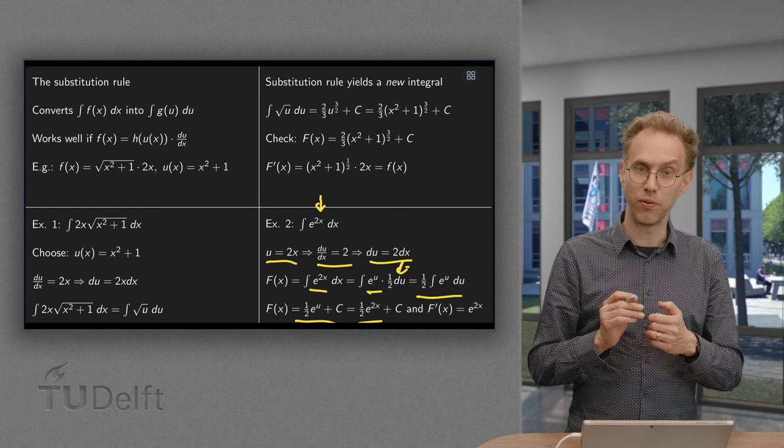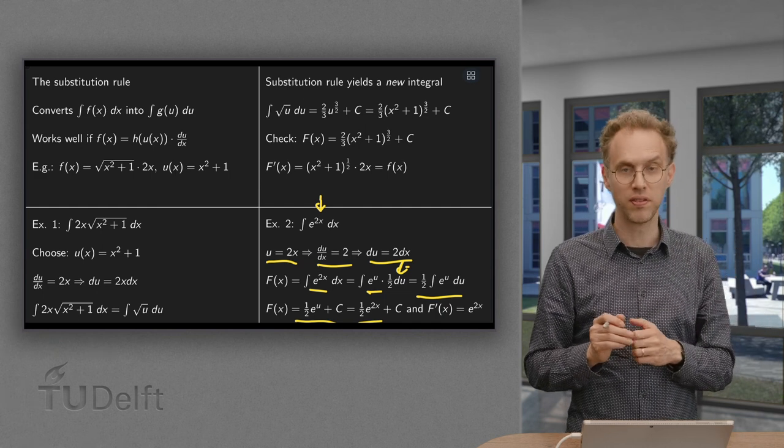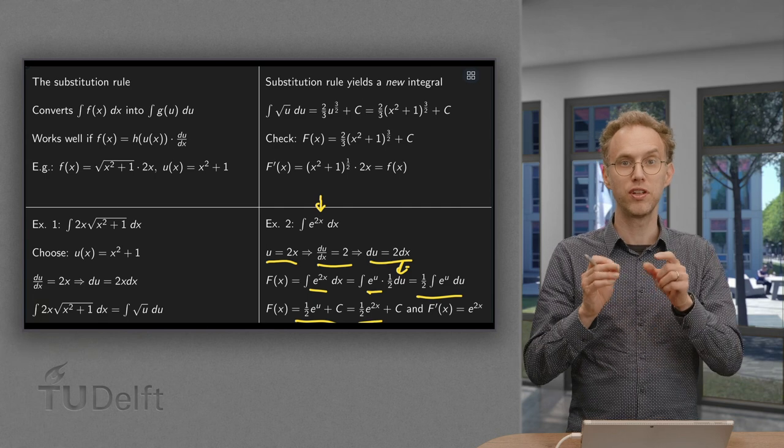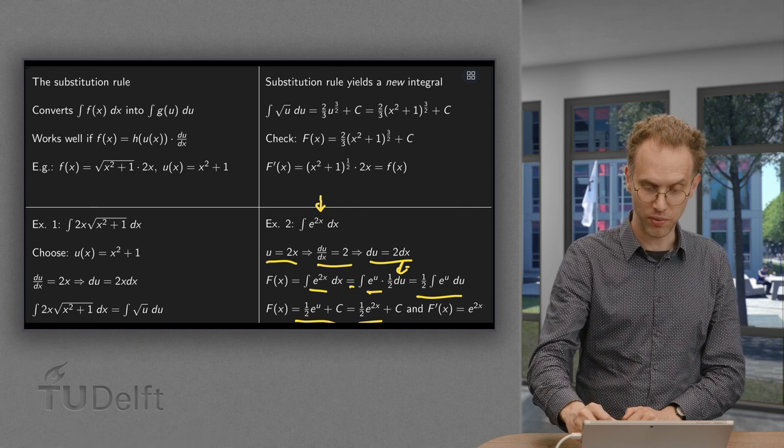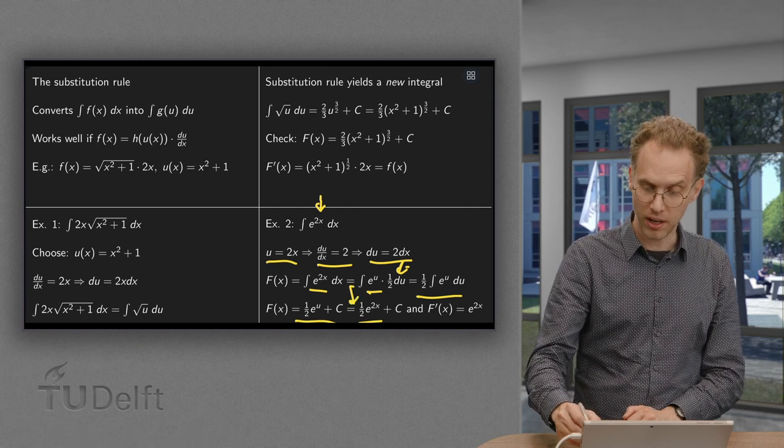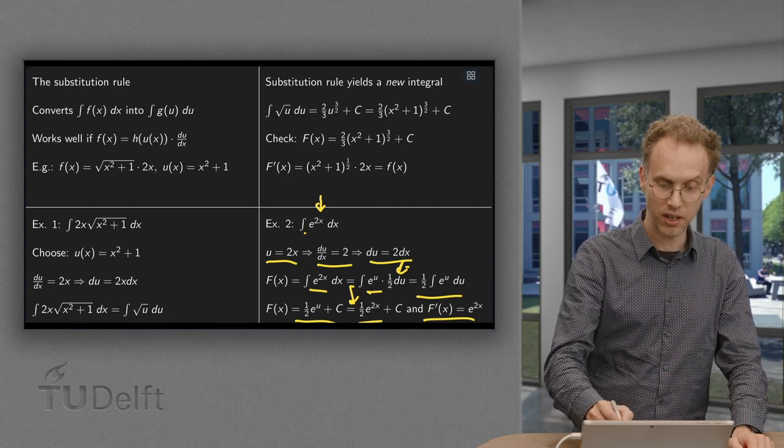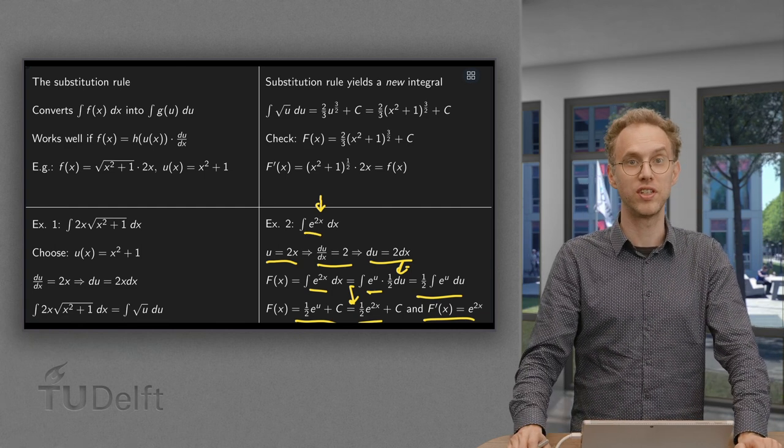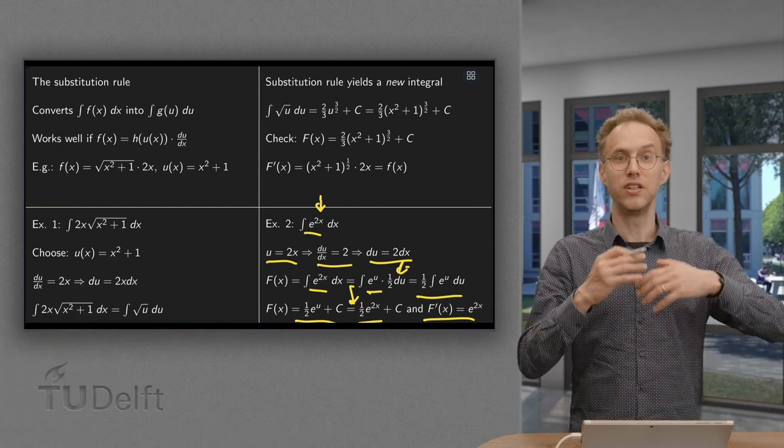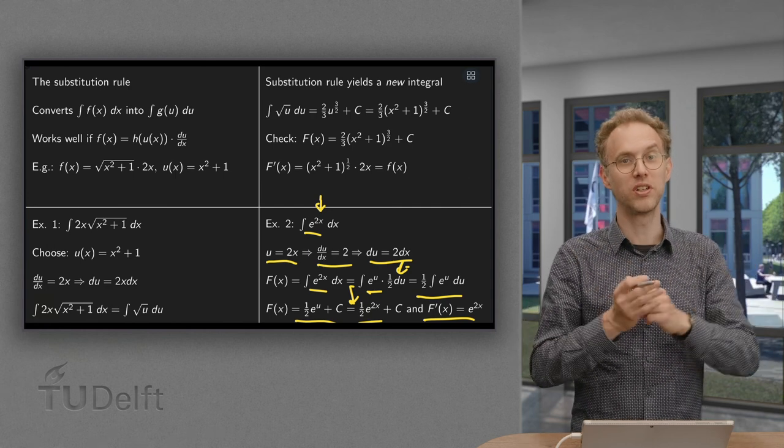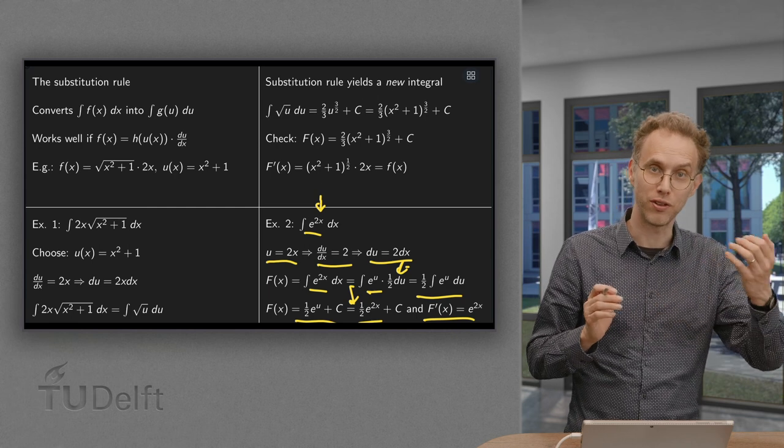And again, if you check whether your work is correct, compute the derivative of the antiderivative. So we compute the derivative of e to the power 2x, that's e to the power 2x times 2, which cancels out with the 1/2. So capital F prime equals e to the power 2x, which is indeed the function small f of x where we started. So this is how the substitution rule works. You find a new variable u, you find a new integral, and hopefully your new integral is easier than the first one you started with.